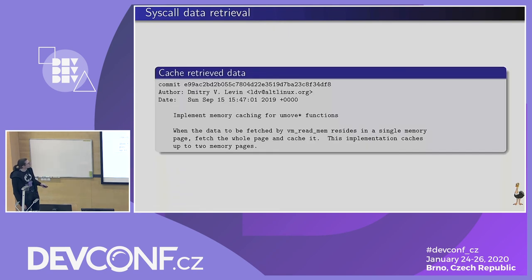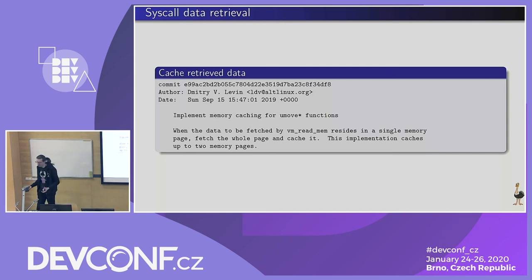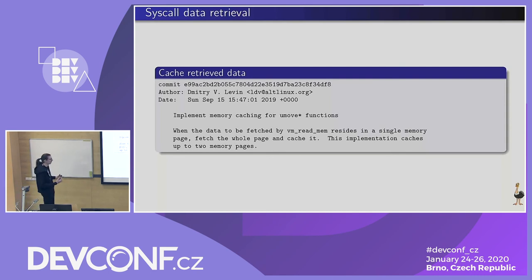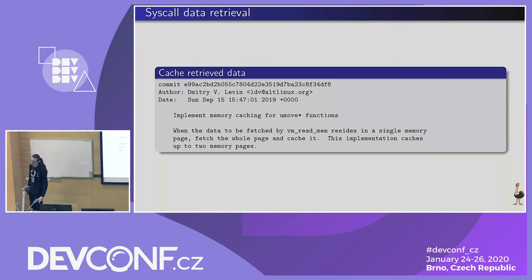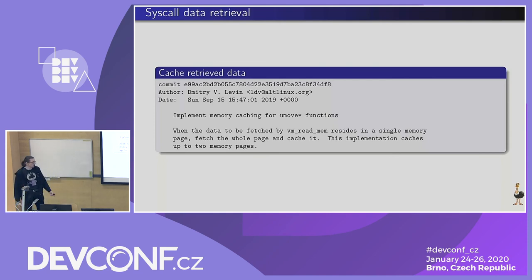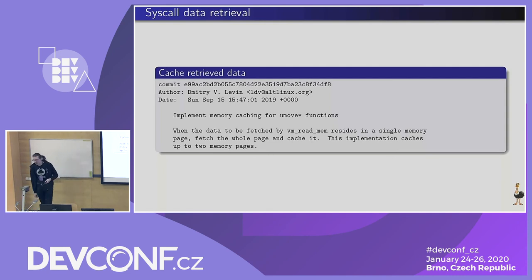It was still a bit cumbersome since we had separate iovec calls for each array item and so on. So six years later, we implemented caching of the whole page for a single process_vm_readv call, which allowed speeding up array parsing considerably.